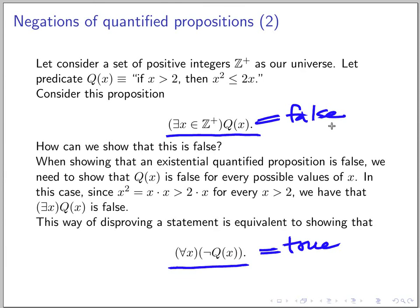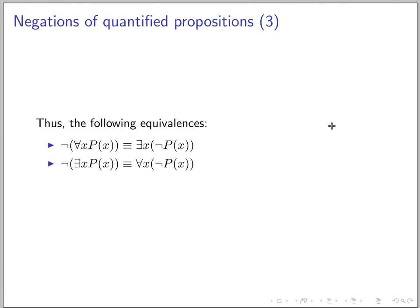Let me conclude with these equivalences. The negation of 'for all x, P(x)' is 'there exists x such that P(x) is false' — because to disprove a universal claim you only need one counterexample. Conversely, the negation of 'there exists x such that P(x)' is 'for all x, not P(x)' — because you must show no x satisfies it. These are the formal negation rules for quantified propositions.